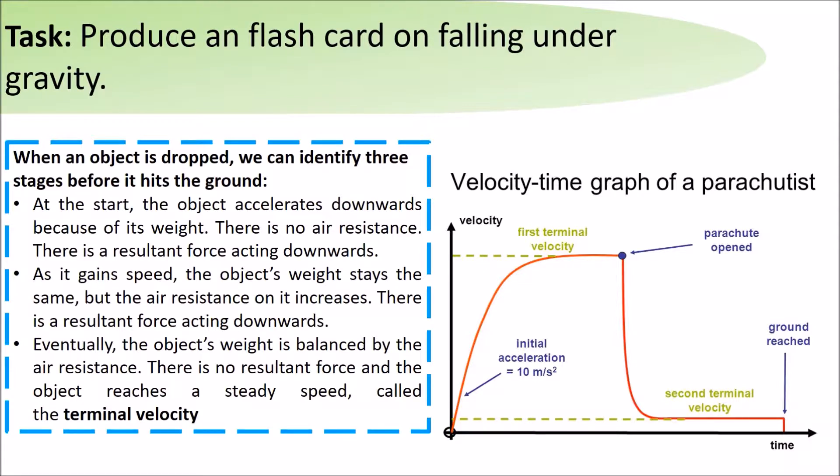As it gains speed, the object's weight stays the same but the air resistance on it increases. There is a resultant force acting upwards. Eventually, the forces balance and the object falls with a constant velocity.